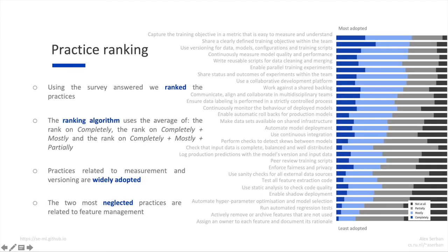We used the survey answers to rank the practices based on their adoption rates. The questionnaire contained four types of answers: not at all, partially, mostly, and completely, signifying the adoption rate for each practice. Based on these answers, we defined a ranking algorithm which takes the average rank on 'completely', 'completely plus mostly', and 'completely plus mostly plus partially', corresponding to at least complete adoption, at least mostly adoption, and at least partial adoption. By averaging over the three ranks, we aim to eliminate noise from the boundaries between answers or from practices that cannot be completely adopted.